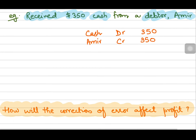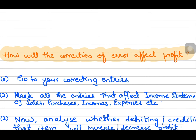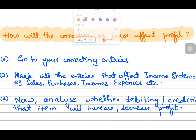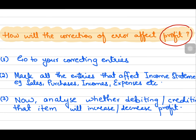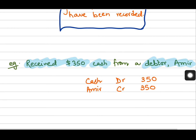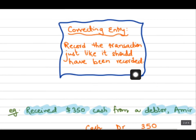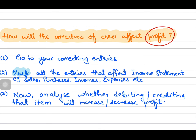One thing that is almost always tested with errors questions is how the correction of an error will affect your profit. After the correction of the error, how will it affect the profit? Sometimes you are asked to calculate the corrected profit, and sometimes you just need to state whether it will increase the profit, decrease the profit, or have no effect. First, go to your correcting entries, then identify all entries that affect your income statement.